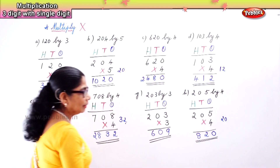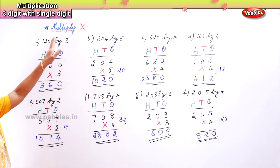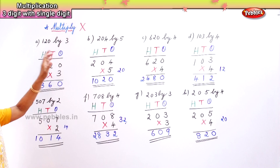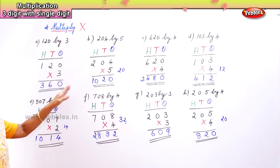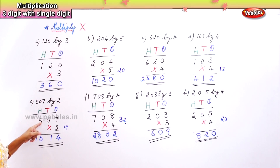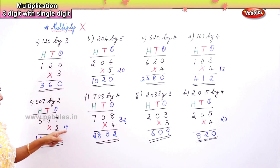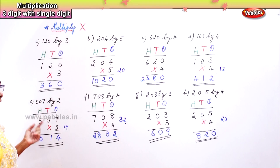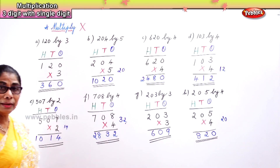So we learnt today to multiply a three-digit number by a single digit number, and what we need to do when a zero comes in between — that's what we learnt. When there is a zero in the tens place and seven twos are fourteen, you put the four but the product of zero into two is zero, so you bring that one to the hundreds place. That's what we learnt today.